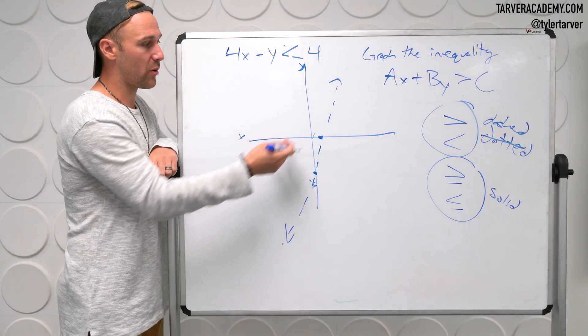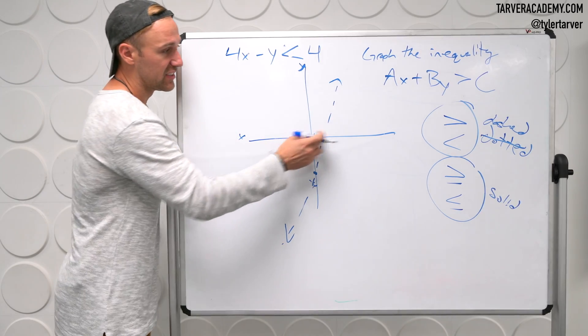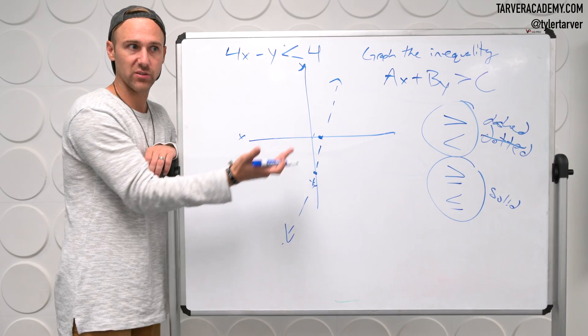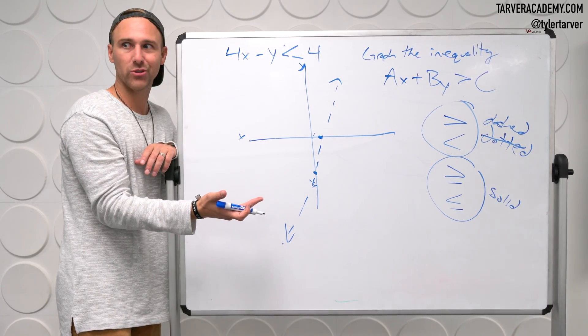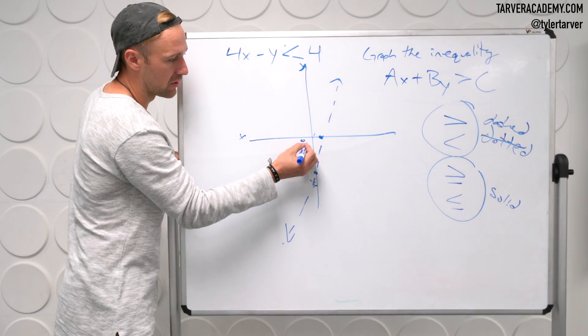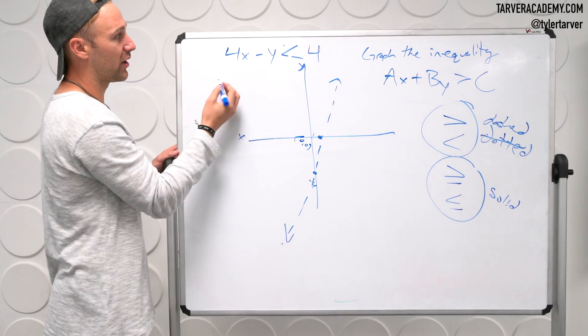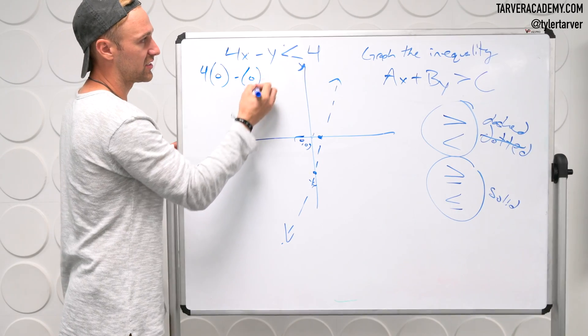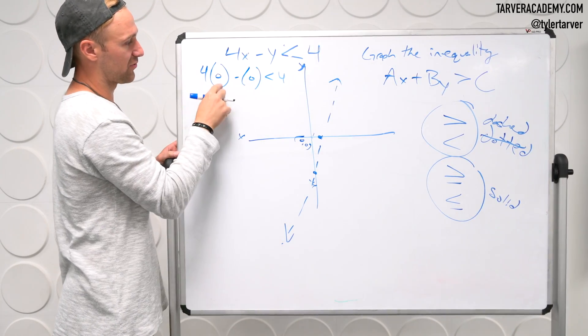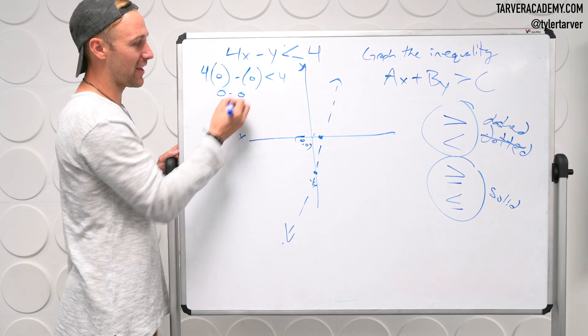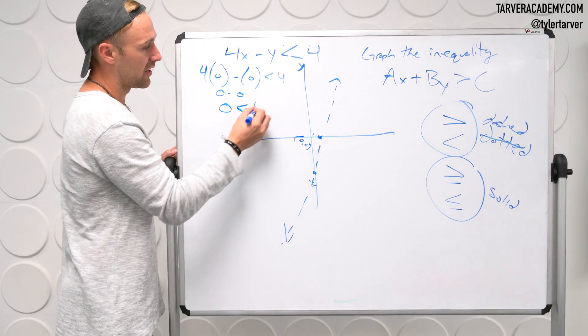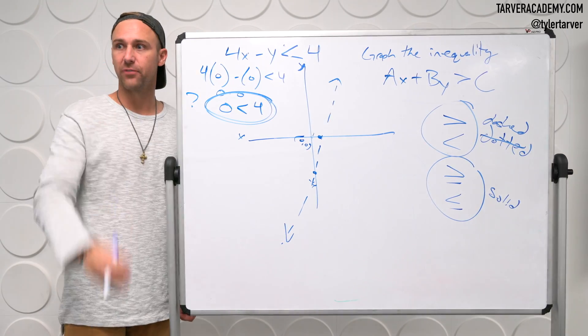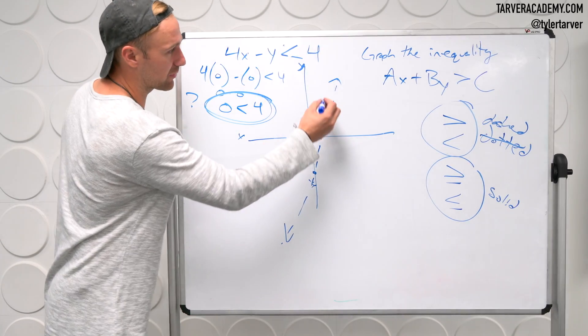You can pick any coordinate you want. We can pick negative four, eight. We could pick seven, negative two. I think it's easiest to plug in the origin because why? Zero, zero. Yeah. So we'll plug it in. Do I plug in it for X? Zero. What do I plug in it for Y? Zero. Zero. What's four times zero? Zero. Zero minus zero. Zero. Now, we got to ask ourselves, is that true? Is zero less than four? Yes. Then we shade the side with the origin.